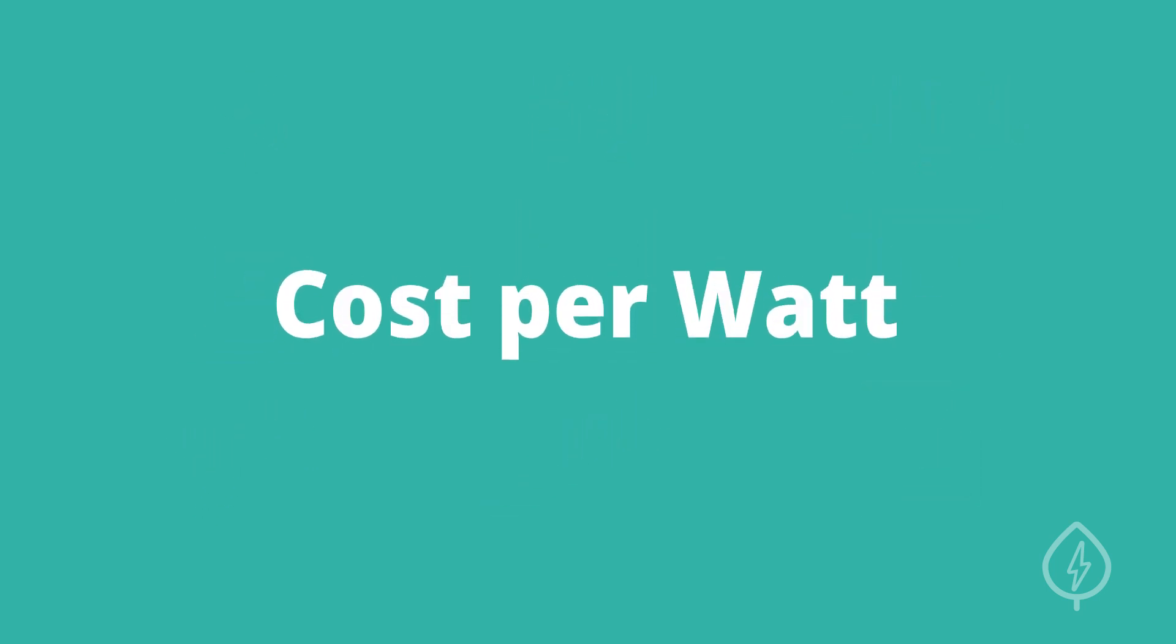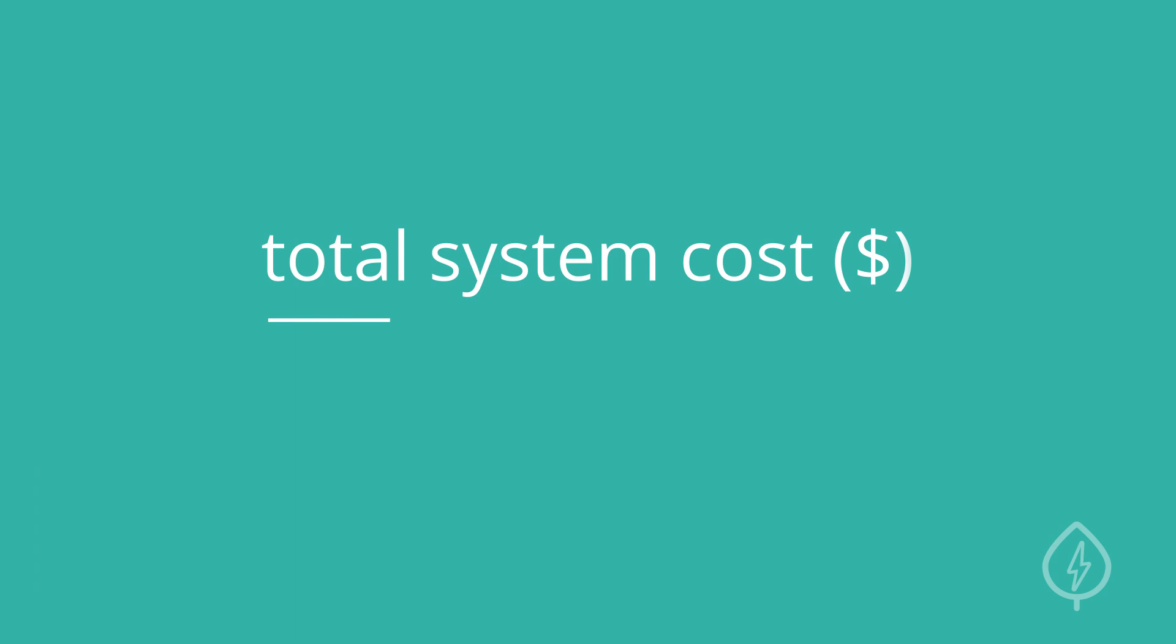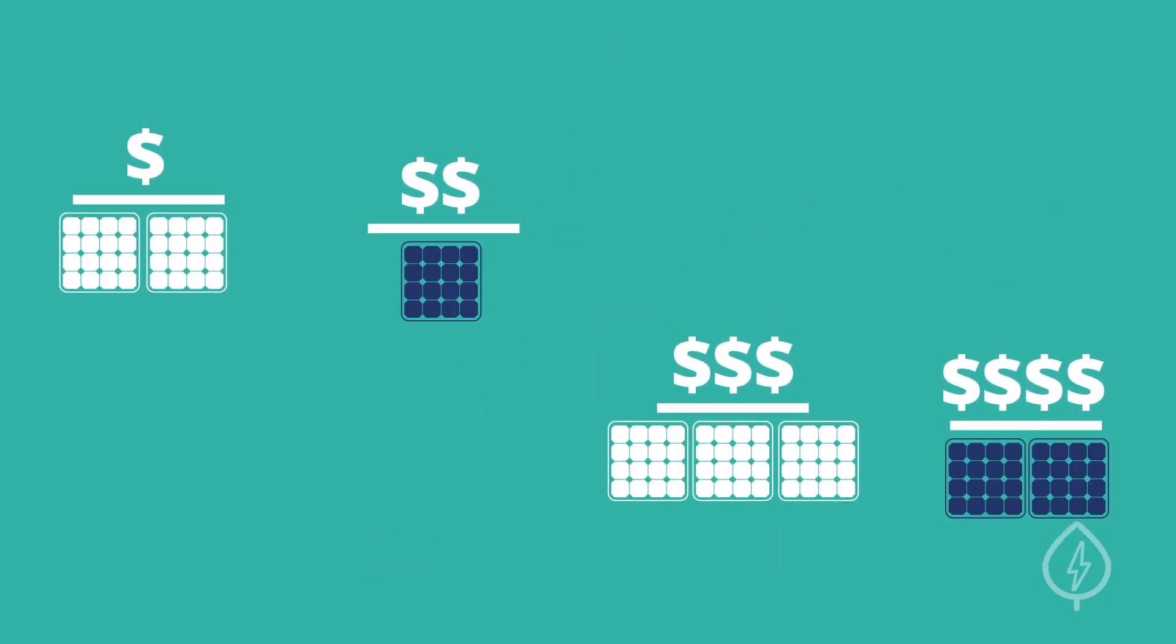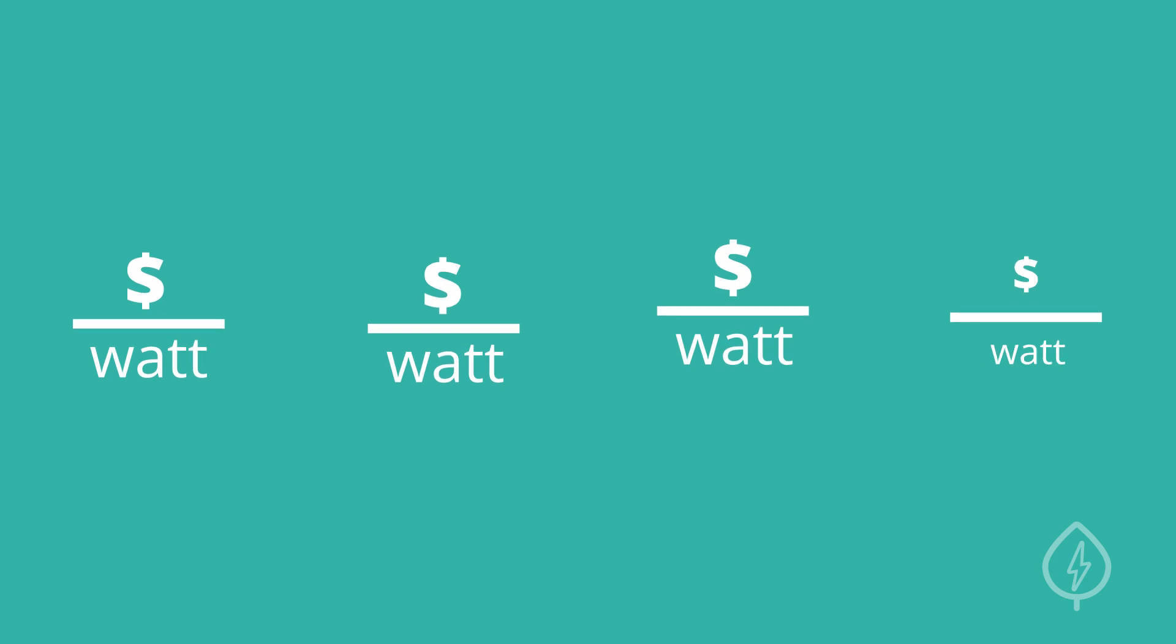First, figure out your cost per watt. Your quote should include the total cost of the system. Divide this number by the size of your system in watts to determine your cost per watt. This is similar to calculating dollars per square foot when shopping for a new home. Cost per watt is a useful metric because it standardizes pricing across various system sizes and will help you compare multiple quotes.